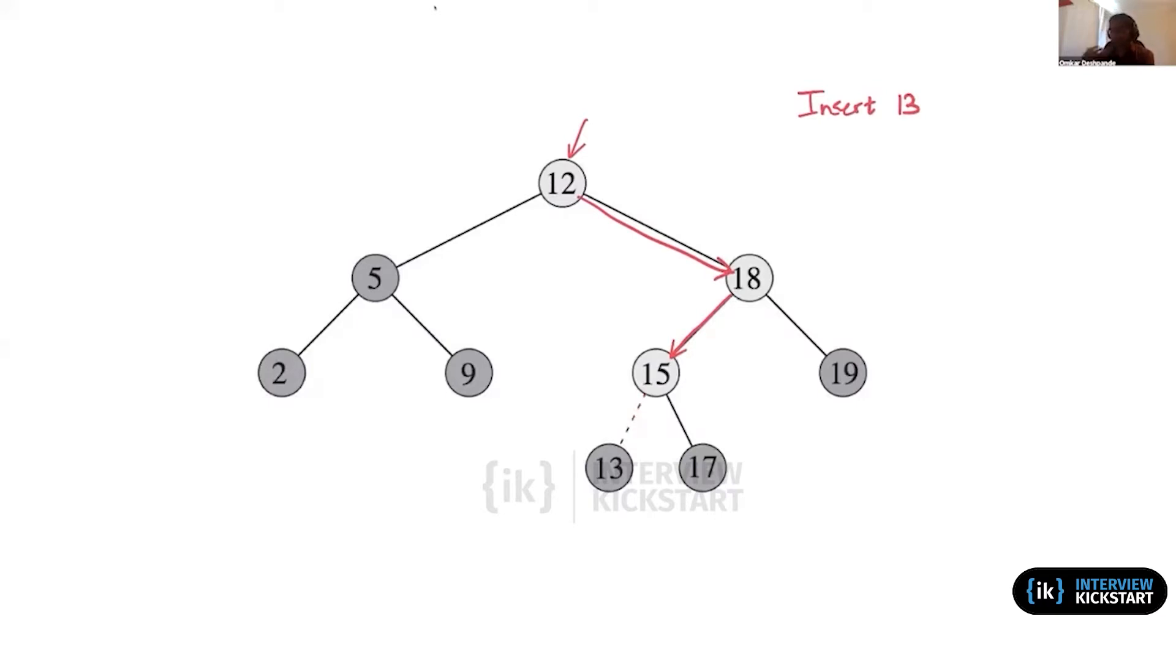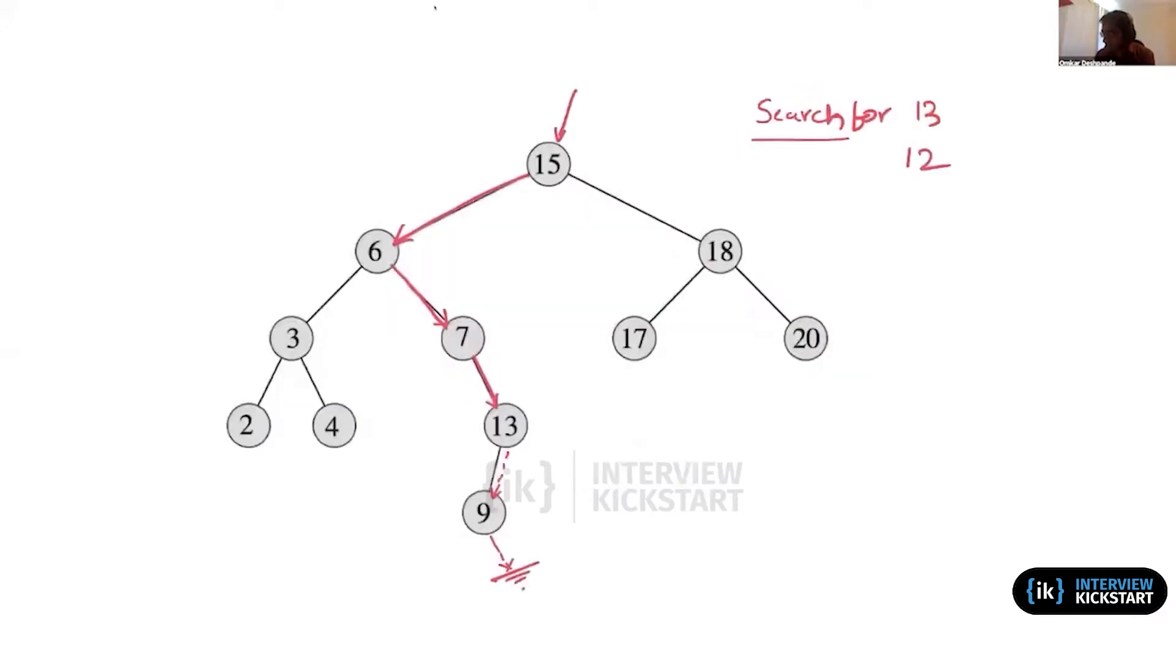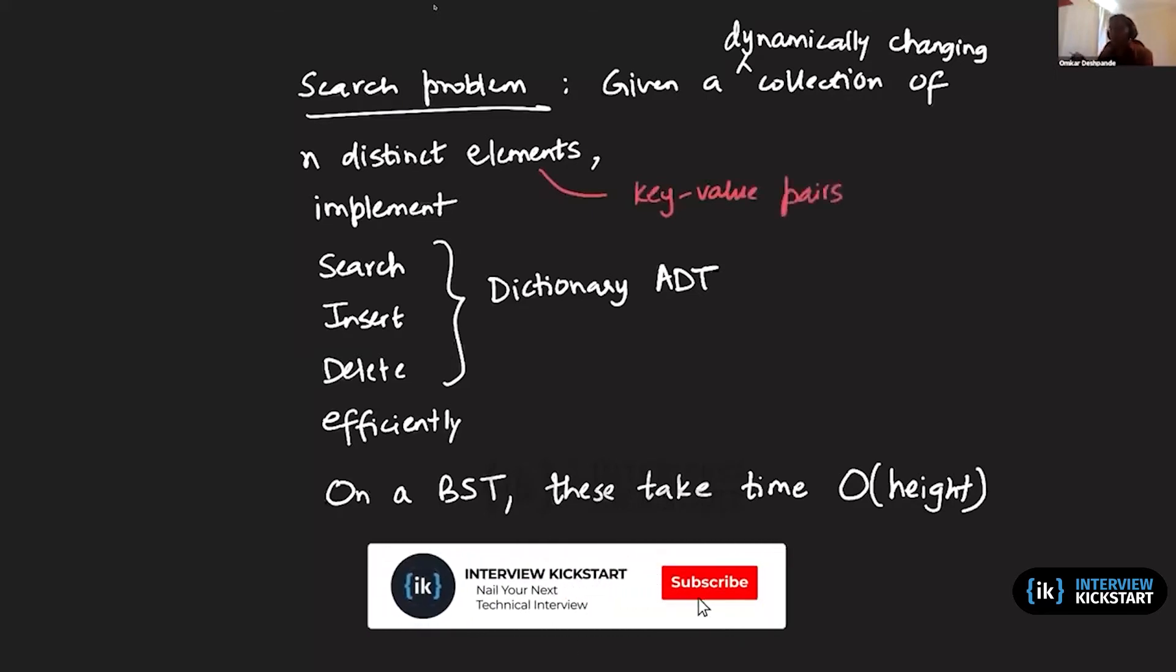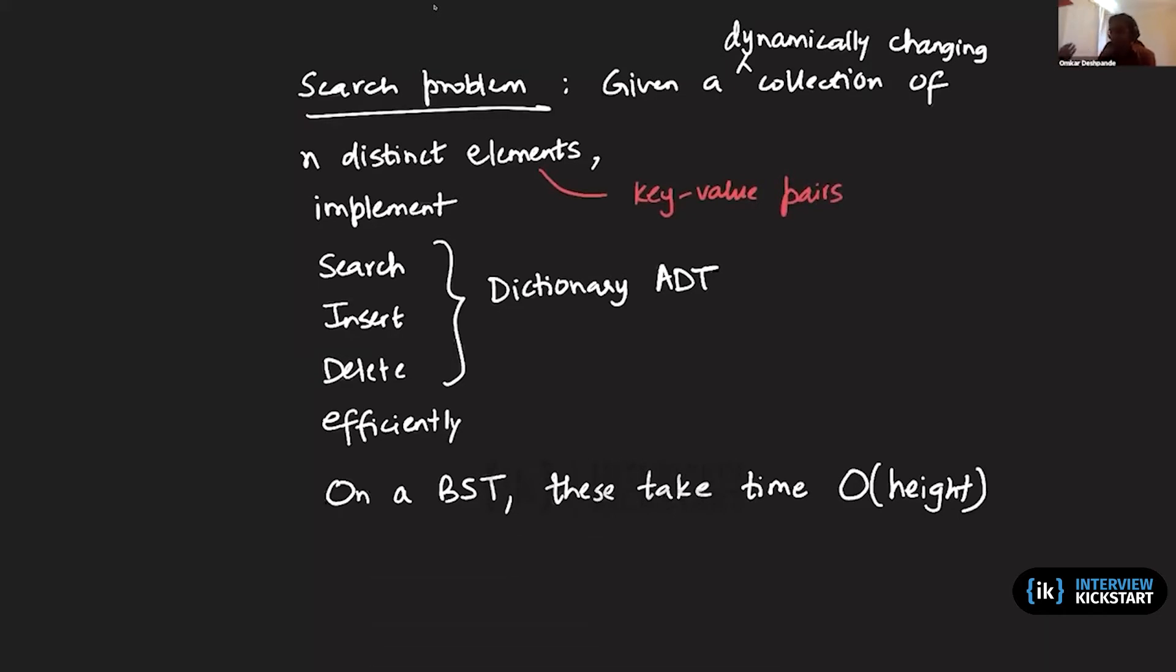We're going to assume today that all the elements are distinct, and that's because these elements are assumed to be key-value pairs. For every key-value pair, there should be a unique key. The values might be associated attributes which are stored alongside the key, but the key has to be unique, otherwise we can't really use this dynamically changing collection as a dictionary or map.